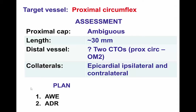Assessing the lesion: we have a proximal circumflex CTO with an ambiguous proximal cap, approximately 30 mm in length, although there appears to be a second CTO further down in the circumflex. The distal vessel is relatively small size, and there are actually two CTOs — one in the OM1, as well as a CTO in the larger 2nd obtuse marginal branch. The patient has both ipsilateral and contralateral epicardial collaterals.